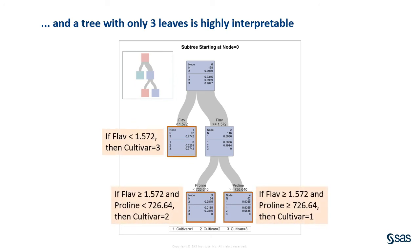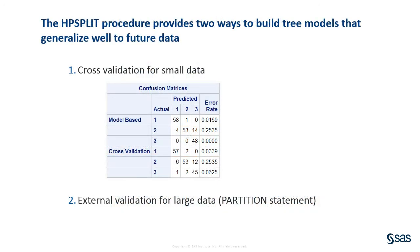For example, if the flavonoid content is less than 1.572, the sample is assigned to cultivar 3. The HP split procedure supports both cross-validation and external validation for selecting tree models that avoid overfitting and generalize well to future data.